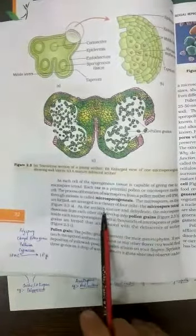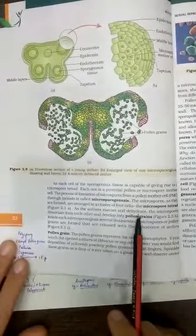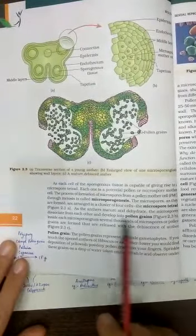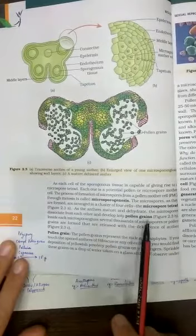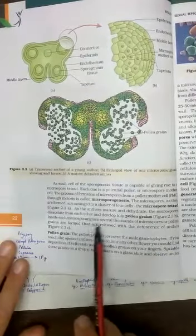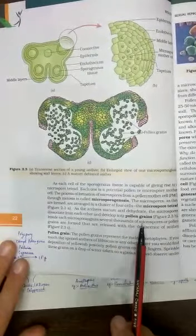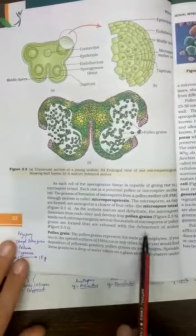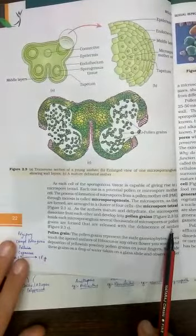Microspores as they are formed, they are in the form of tetrads. And as they mature and dehydrate, they separate from each other to develop into pollen grains. Inside each microsporangium, several thousands of them are there and they all come out at the point of dehiscence of the anther.